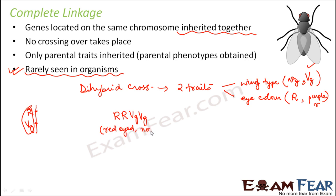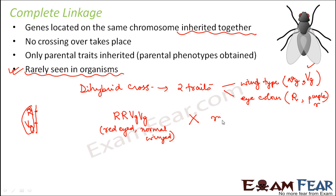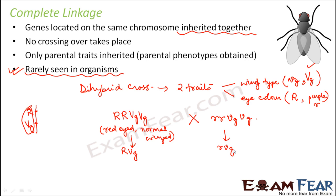...with a purple-eyed vestigial wing Drosophila. The only possible gamete formed here is RVg, and the only gamete possible from the other parent is rvg. So what do we get in the F1 generation?